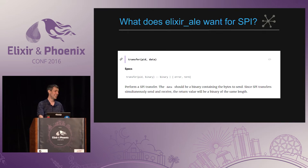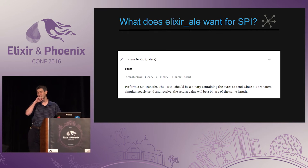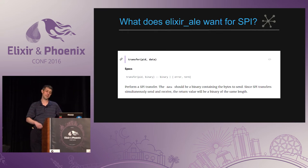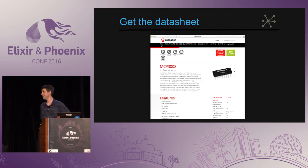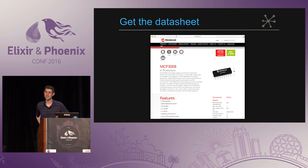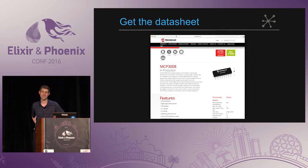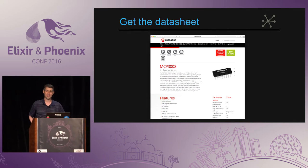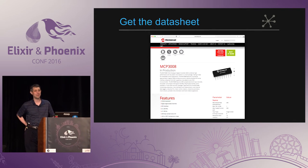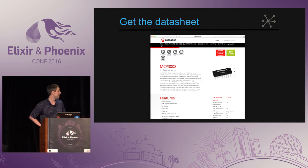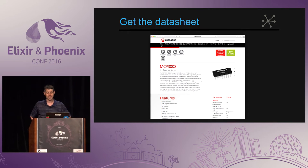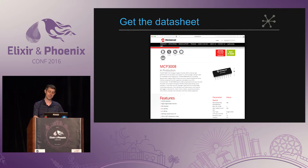Now we need the API for this chip. In hardware speak, an API is a data sheet. Data sheets have a lot of scary stuff in them, but the good stuff — the real API — is what you need to find. Google will get you there. For the MCP-3008, you go to its web page, download the data sheet, and then find the most important diagram.